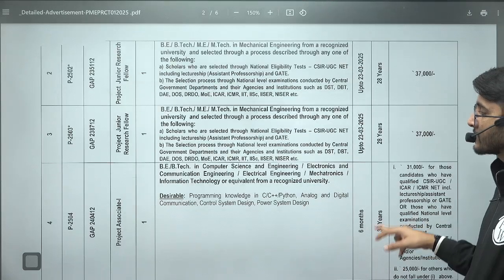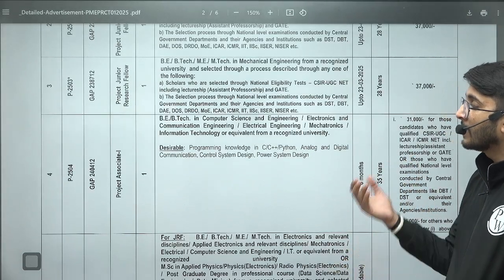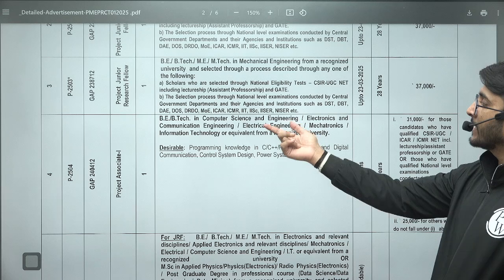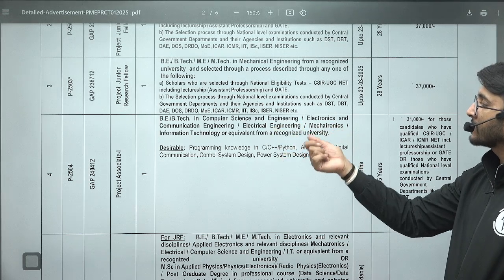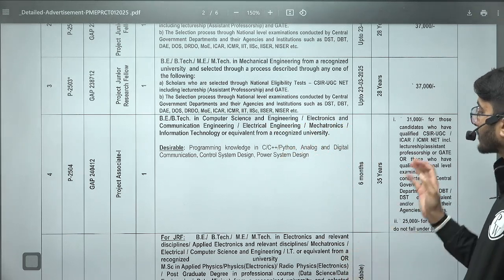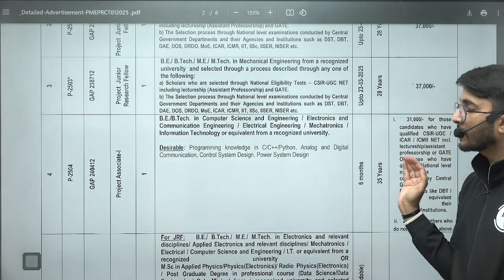There are some students who are not able to qualify GATE examinations, they also have eligibility. If you completed your graduation in BTech Computer Science and Engineering, Electronics Engineering, Communication, Electrical, Mechanical, Mechatronics, Instrumentation, then you also have opportunities. Six month tenure projects are there. You will receive 31,000 if you qualify GATE. If you don't have GATE qualification, then you will receive 25,000 per month stipend.